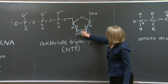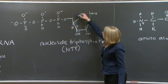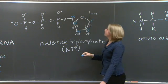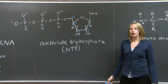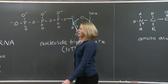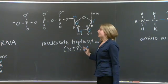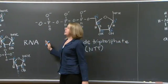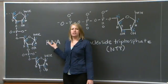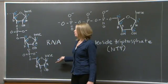Continuing, three prime, four prime, and this last five prime carbon. This means that when we polymerize two or more of these NTPs to get an RNA chain, it becomes apparent why one end is labeled five prime and the other end is labeled three prime.